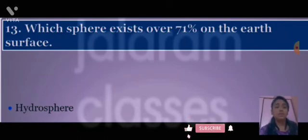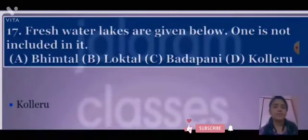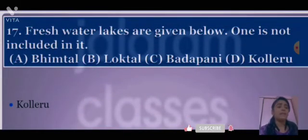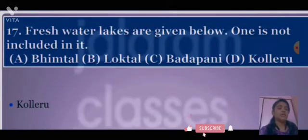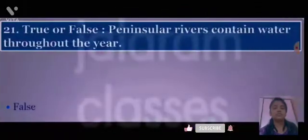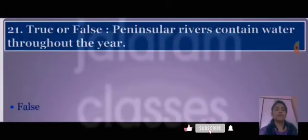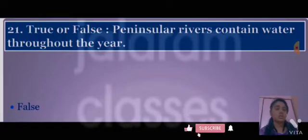Which sphere exists over 71% of the Earth's surface? Answer: hydrosphere. Next: which of the following freshwater lakes is not included in the given list? Answer: D, Koliwar.